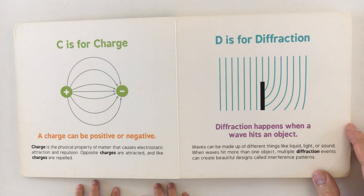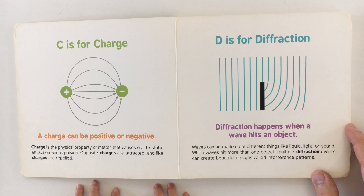C is for charge. A charge can be positive or negative. A charge is the physical property of matter that causes electrostatic attraction and repulsion. Opposite charges are attracted and like charges are repelled.